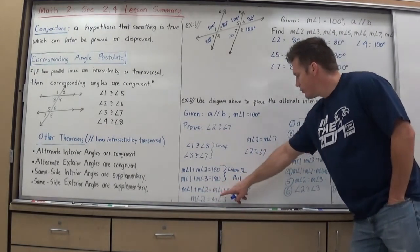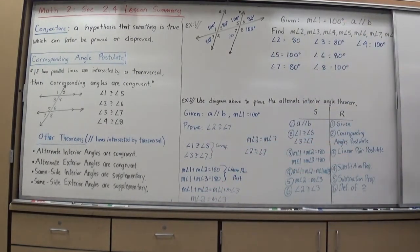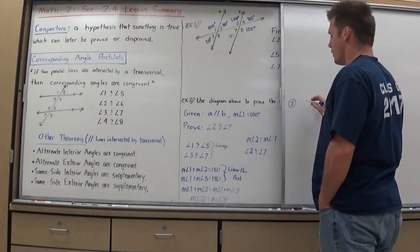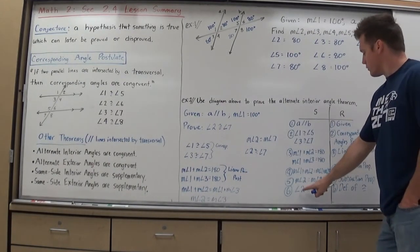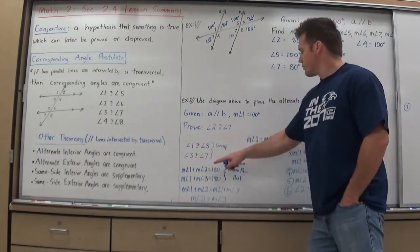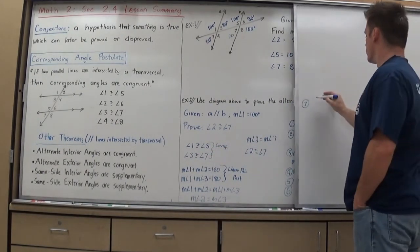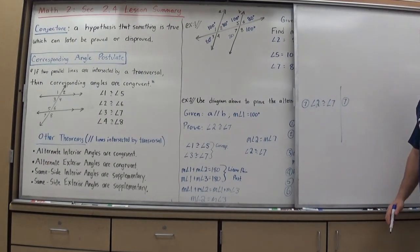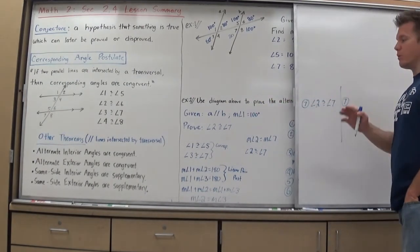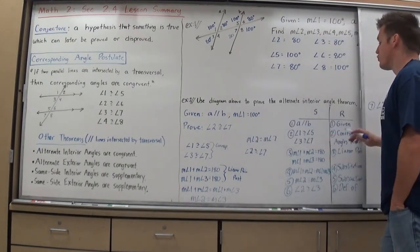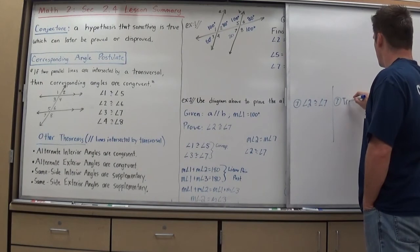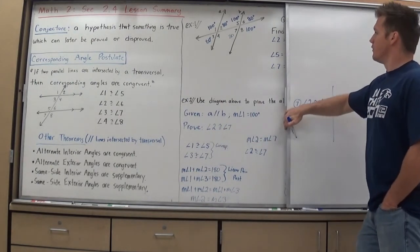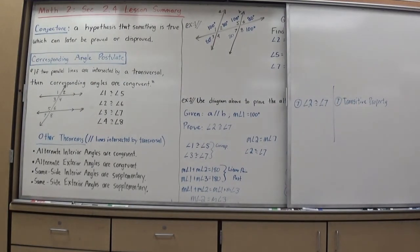From there, since angle 2 is congruent to angle 3 and angle 3 is congruent to angle 7, by the transitive property — if A equals B and B equals C, then A equals C — angle 2 must be congruent to angle 7. I have now completed my proof, which was to prove that angle 2 is congruent to angle 7. Since angles 2 and 7 are alternate interior angles, this proves the Alternate Interior Angle Theorem.